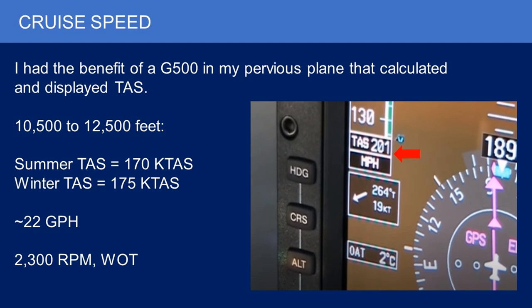Let's talk about cruise performance. I had the benefit in my previous 310 of a G500, which automatically calculates and displays true airspeed. That airplane was a 1970 model in miles per hour, so I'm converting everything to knots, and I have extensive data from that. I always fly above 10,000 feet, usually between 10,500 and 12,500. Very straightforward — it was like clockwork: in the summer my true airspeed was 170 knots, and in the winter 175 knots. That is at 22 gallons per hour, 2,300 RPM, and wide open throttle — consistently 170 to 175 knots.